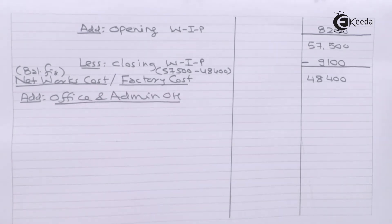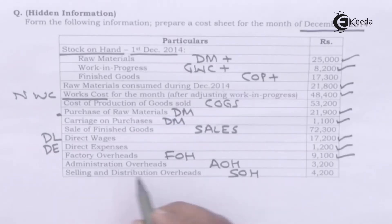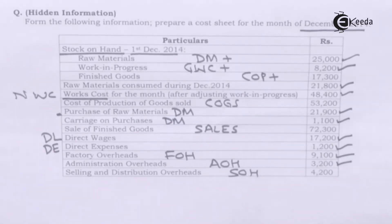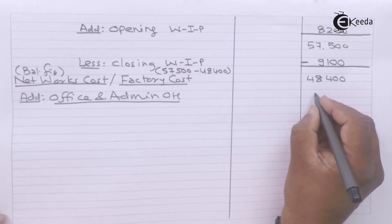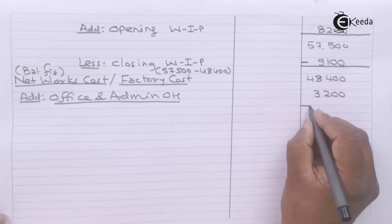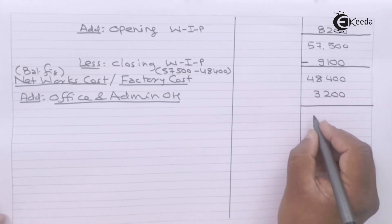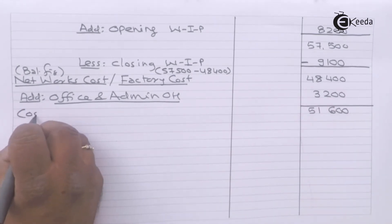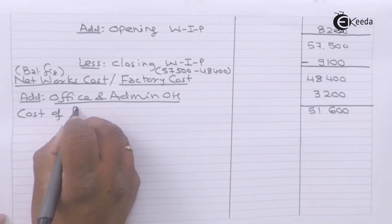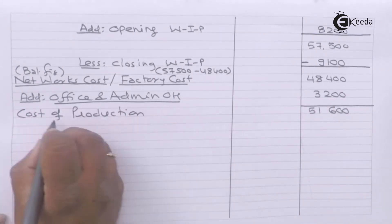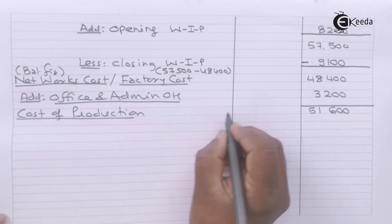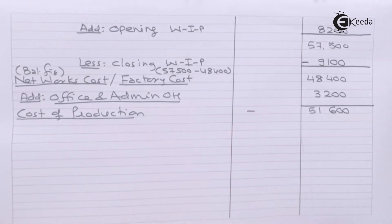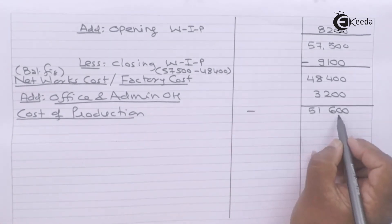To the amount of net works cost we have to add office and administration overheads, which is given as 3,200. We got cost of production as 51,600.